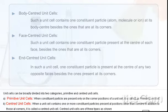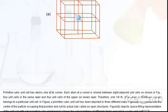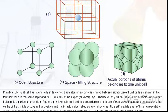Primitive unit cells and centered unit cells. Primitive cubic unit cell has atoms only at its corner. Each atom at a corner is shared between eight adjacent unit cells, as shown in figure. Four unit cells in the same layer and four unit cells of the upper layer. Therefore, only one-eighth of an atom or molecule actually belongs to a particular unit cell.